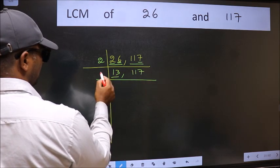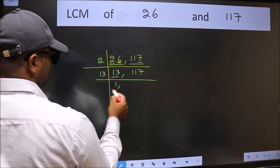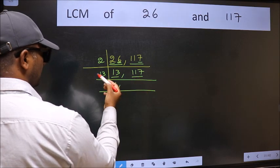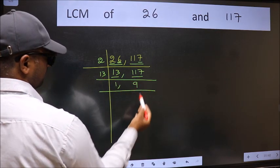Now here we have 13. 13 is a prime number. So 13, 1 is 13. The other number 117. When do we get 117 in 13 table? 13, 9 is 117.